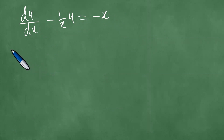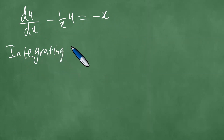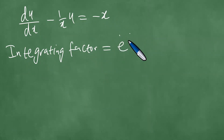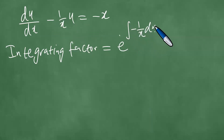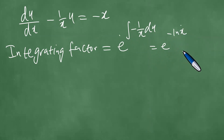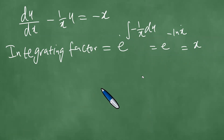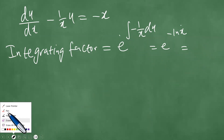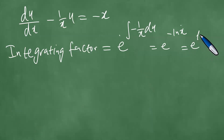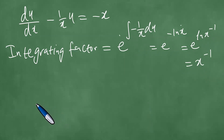We find the integrating factor, which is e to the power of the integral of the coefficient of u, which is minus 1 over x. This integral gives minus the natural log of x. So the integrating factor is e to the power ln(x to the minus 1), which equals x to the minus 1.